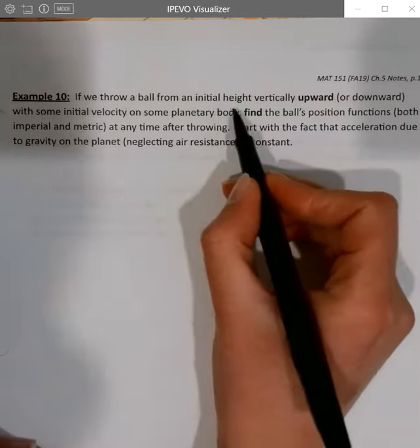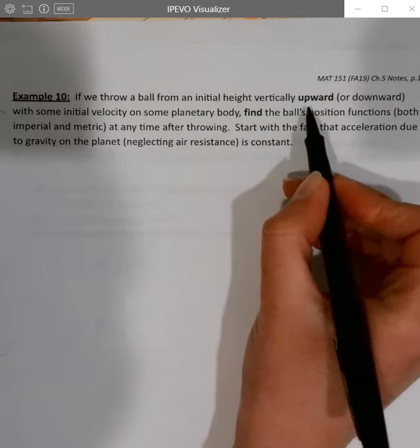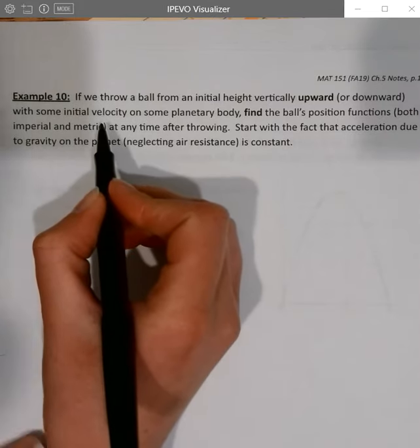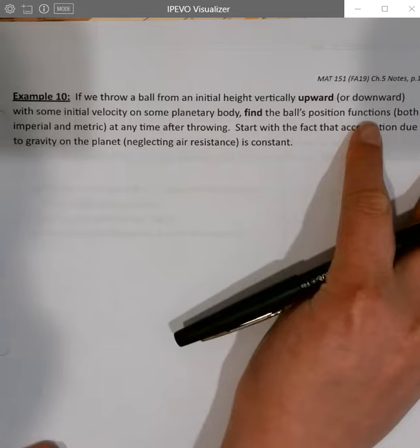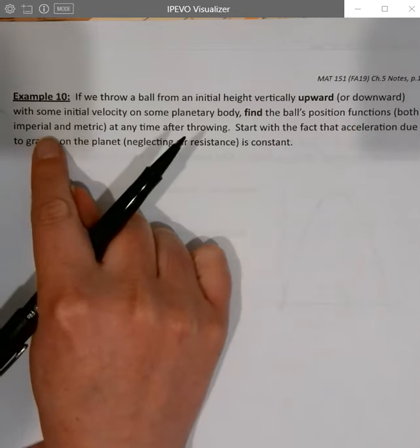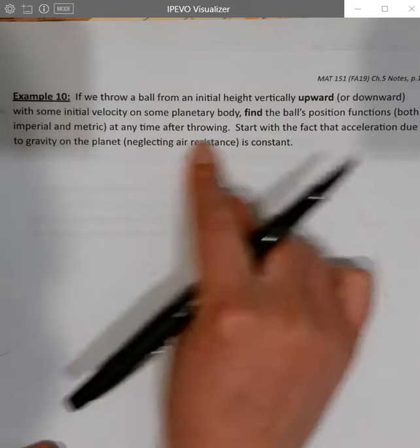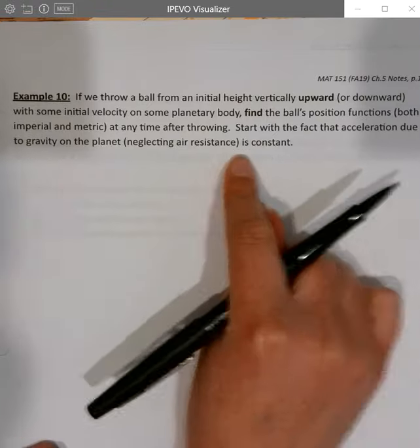In example 10, if we throw a ball from an initial height vertically upward or downward with some initial velocity on some planetary body, we're going to find the ball's position functions both in imperial and metric at any time after throwing.